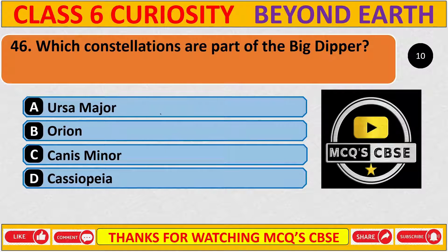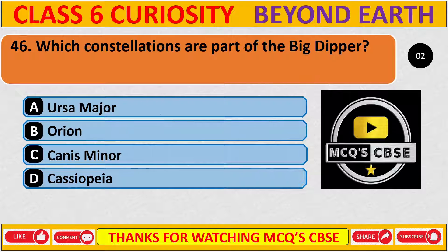Which constellation is a part of the Big Dipper? The correct answer is A, Ursa Major.